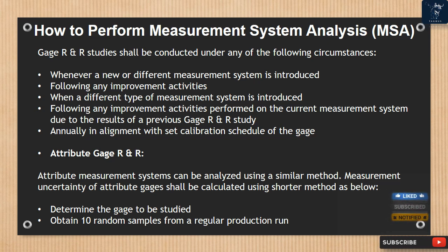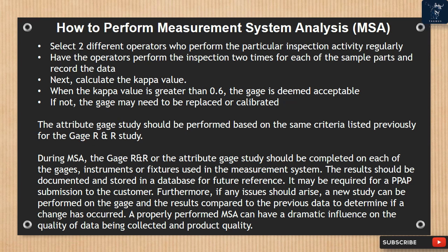Attribute gauge R&R. Attribute measurement systems can be analyzed using a similar method. Measurement uncertainty of attribute gauges shall be calculated using the shorter method as follows: determine the gauge to be studied; obtain 10 random samples from a regular production run; select two different operators who perform the particular inspection activity regularly; have the operators perform the inspection two times for each of the sample parts and record the data. Next, calculate the kappa value. When the kappa value is greater than 0.6, the gauge is deemed acceptable. If not, the gauge may need to be replaced or calibrated. The attribute gauge study should be performed based on the same criteria listed previously for the gauge R&R study.